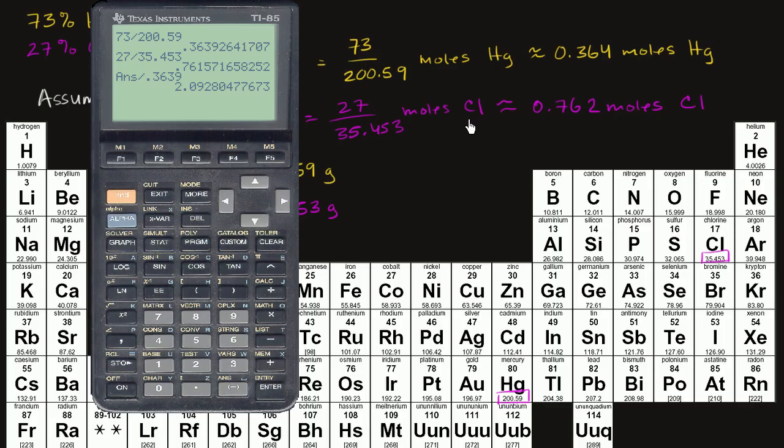But you can say that, okay, it looks like roughly, and this is what I'm talking about when you're trying to find the empirical formula from mass composition. It tends to be a rough science.